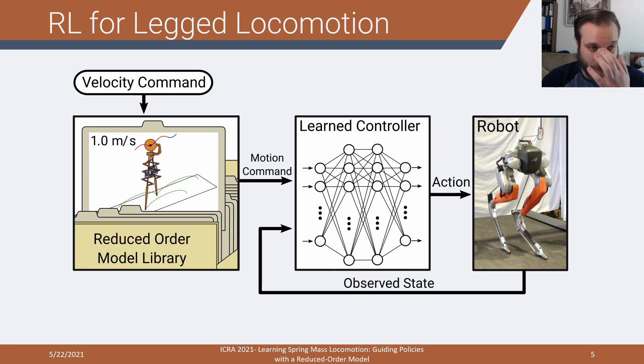So what we used is a reduced order model library, where this has a library of a bunch of steady state gaits for a model. So varying from 0 to 2 meters per second, you have a bunch of periodic gaits at different speeds. And the user will command a velocity via a joystick on a controller, it will select one of these out of the library, which we then use as the motion command into the learned controller.